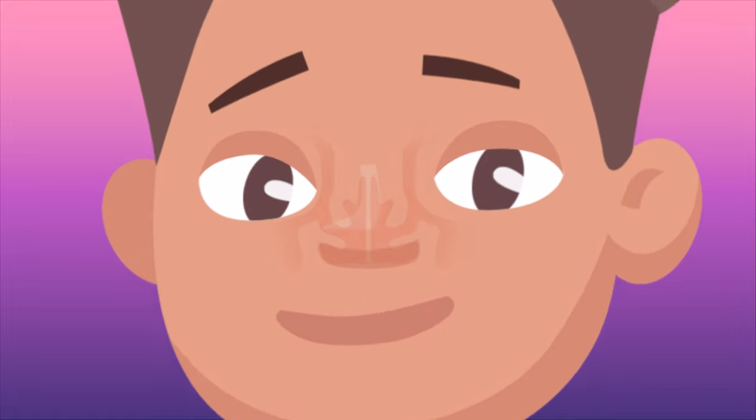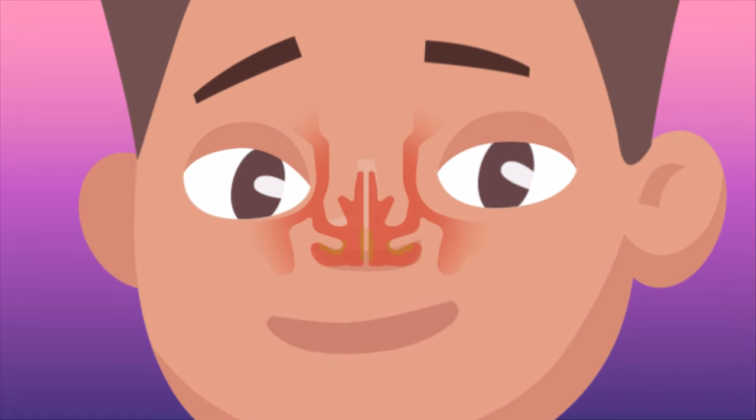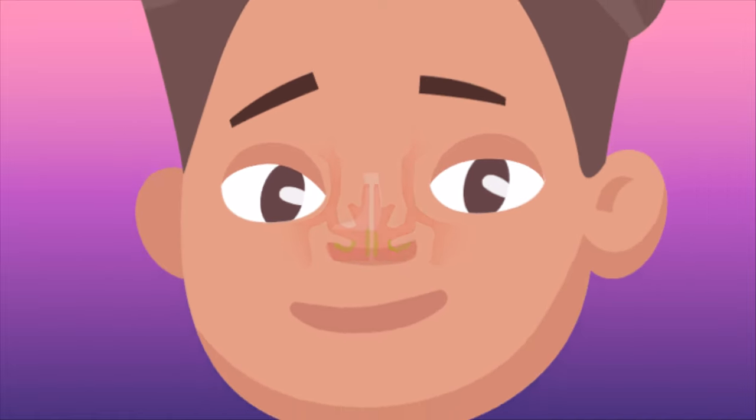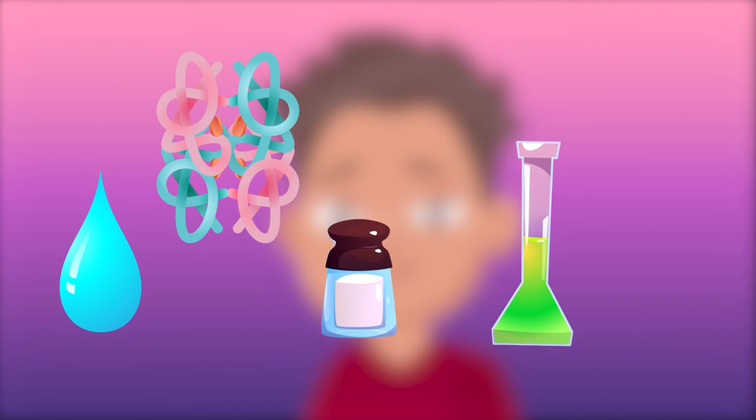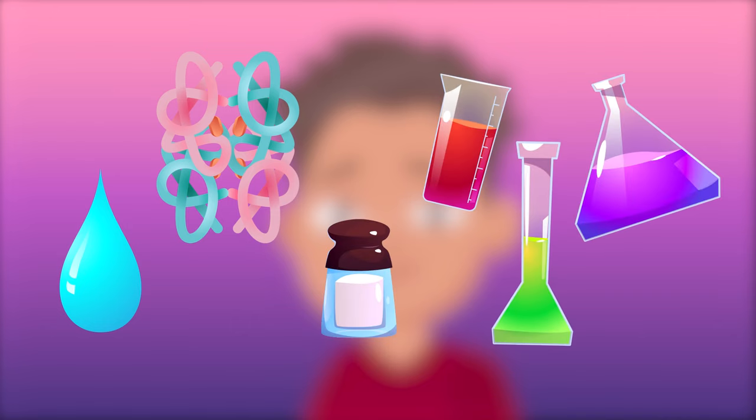All of your boogers start out deep in your nose as an icky, slimy substance known as mucus. It's made up mostly of water, with bits of protein, salt, and other chemicals to keep it nice and sticky.